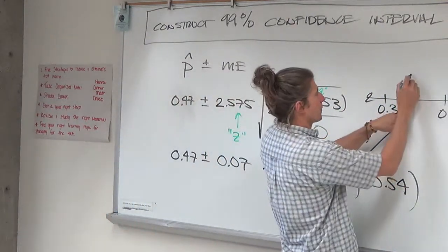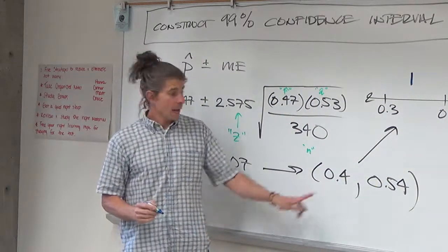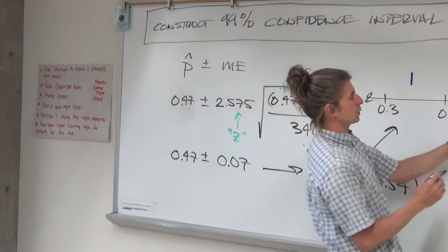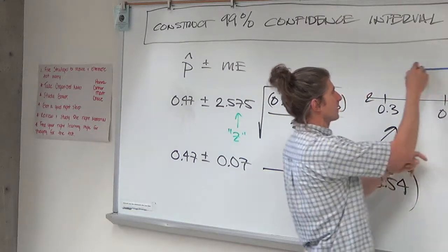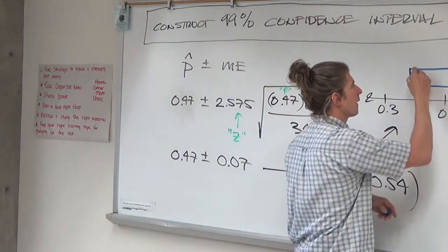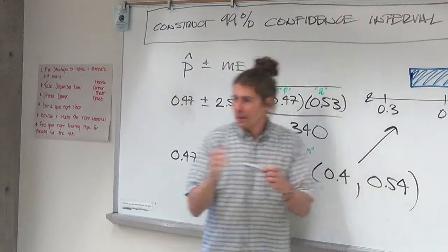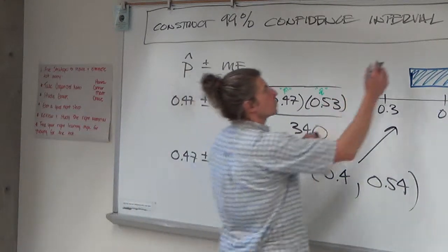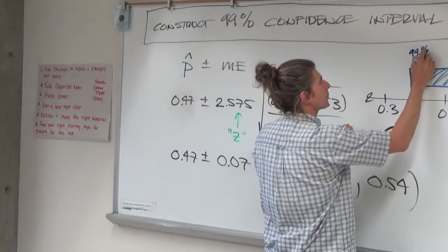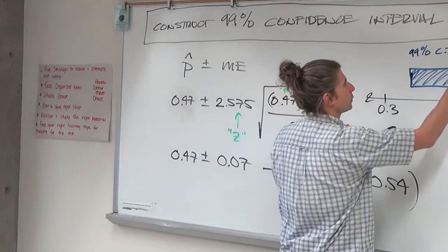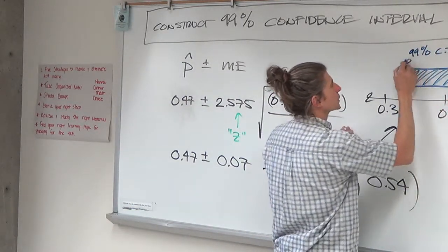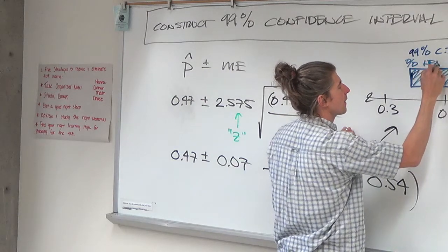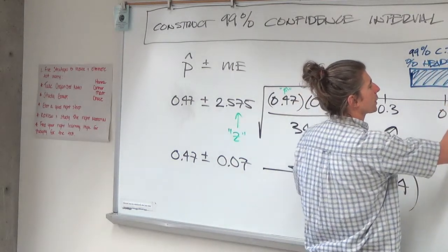Well, 40% is right about there. And 54%, well there's 60, here's 55, it's going to be right about here. That's what a graphic, a geometric graphic of 40 to 54% would be. That would be your 99% confidence interval for the percentage of heads on a coin spin.